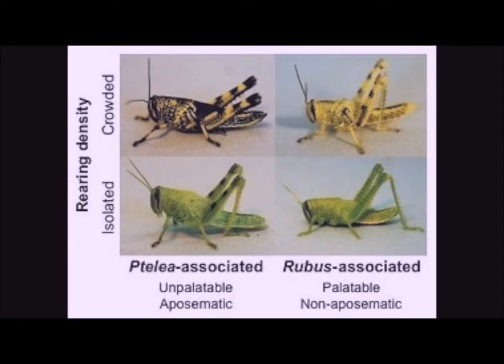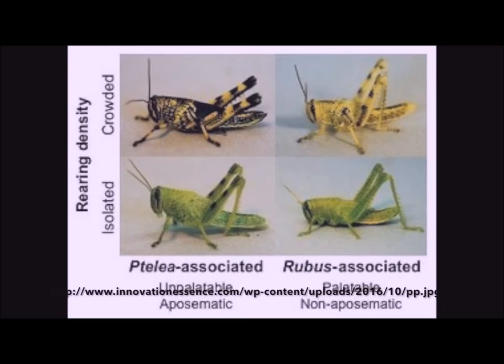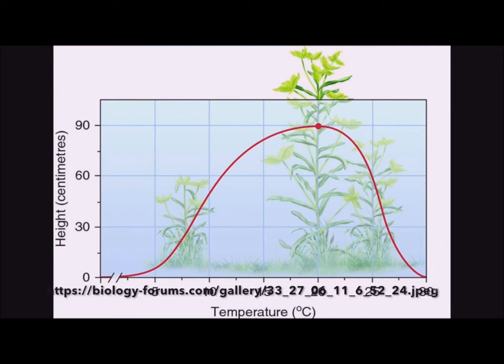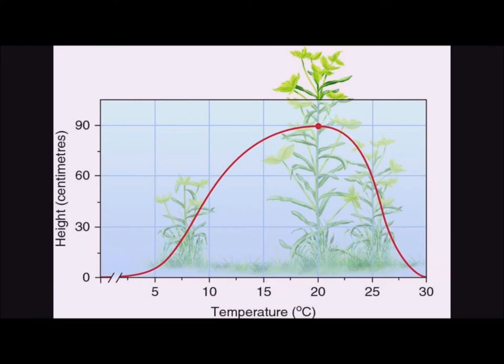The ability of a genotype to give rise to different phenotypic expressions under different environmental conditions is termed phenotypic plasticity. The set of phenotypes expressed by a single genotype across a range of environmental conditions is referred to as the norm of reaction.